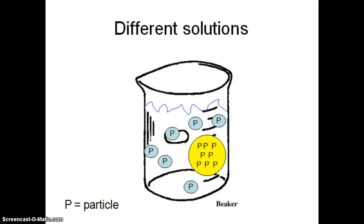In the third solution, there are more particles inside the cell, so the water is going to move into the cell — it's attracted to the particles or solutes. The cell would expand, and this would actually be a hypotonic solution. That should remind you of the worksheet we did, which is a great review for different types of solutions and what would actually happen to the cell.